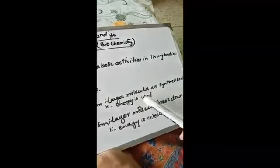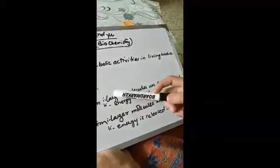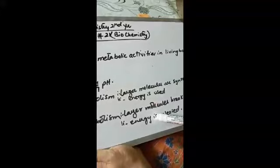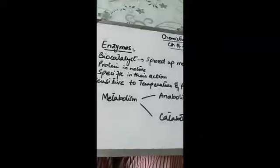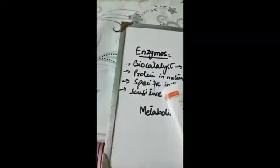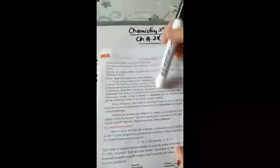During catabolism, larger molecules break down and energy is released. Both processes go on side by side — larger molecules are synthesized in anabolism and broken down in catabolism, and together these activities make up metabolism. Enzymes play their important role to speed up metabolism; they are catalysts and since they speed up reactions in living things, they are known as biocatalysts.